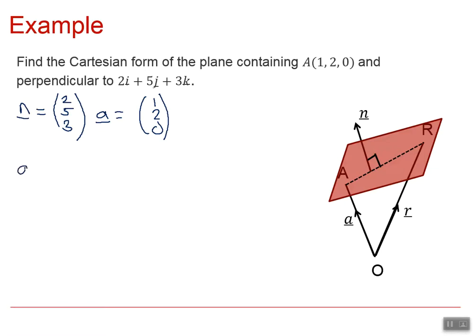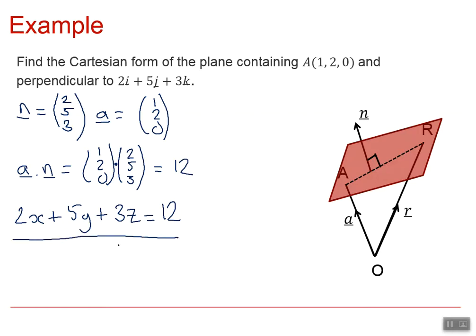If we now do a dot n we would have (1,2,0) dotted with (2,5,3) which gives us 12. So we can now write the equation of the plane in Cartesian form using this normal vector and this value that gives us our point in space. So we write it as 2x plus 5y plus 3z equals 12. That's the Cartesian equation of our plane.